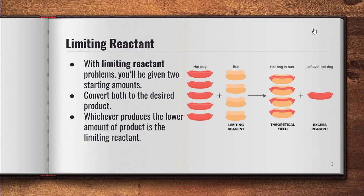With the limiting reactant type problem you'll be given two starting amounts. Essentially you convert both to the desired product that's given to you in the problem and whichever produces the lower amount of the product is the limiting reagent and is also the correct answer. Be careful about what the question is asking for. It may ask you for how much is produced in grams, or it may ask you what actually is the limiting reagent, in which case you would tell me the reactant that produced the lower amount of product.